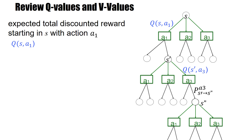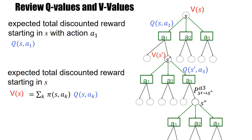Now, what are these Q-values and V-values? The Q-values are the expected total discounted rewards starting in a certain state s with action a1, whereas the V-values are the values in a state — that is, starting in state s, what is the total future amount of reward that we can collect? And this can be re-expressed by the Q-values.